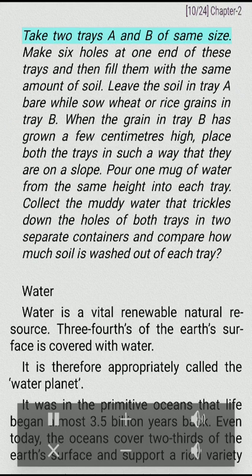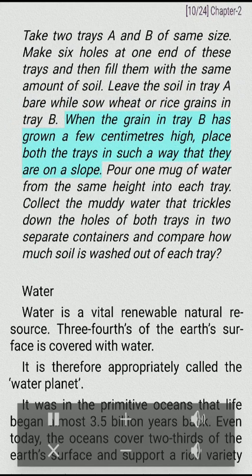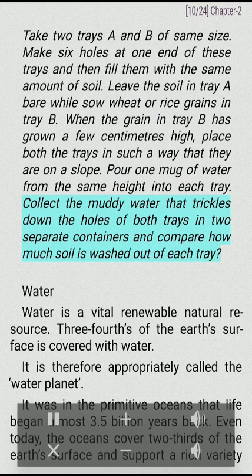Activity: Take two trays A and B of the same size. Make six holes at one end of these trays and then fill them with the same amount of soil. Leave the soil in tray A bare while sow wheat or rice grains in tray B. When the grain in tray B has grown a few centimeters high, place both the trays on a slope. Pour one mug of water from the same height into each tray. Collect the muddy water that trickles down the holes of both trays in two separate containers and compare how much soil is washed out of each tray.